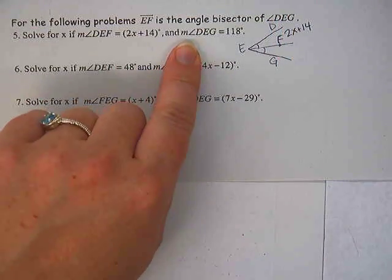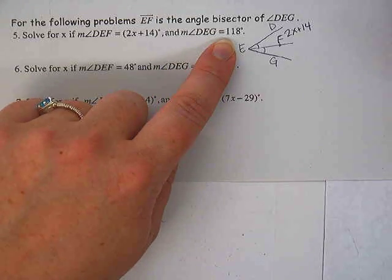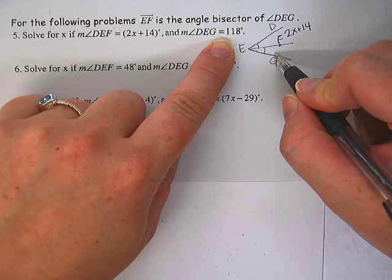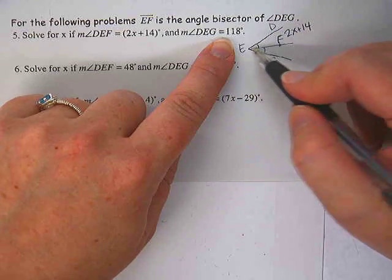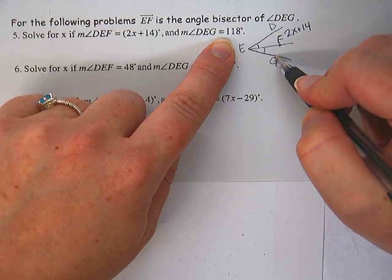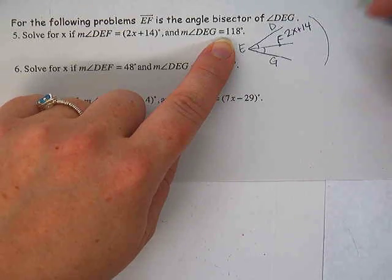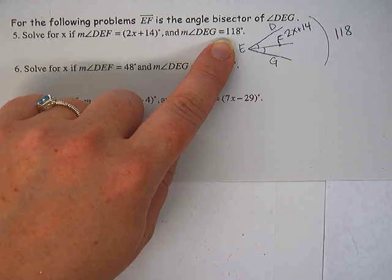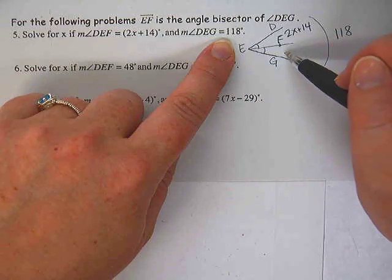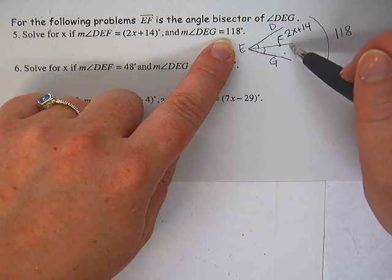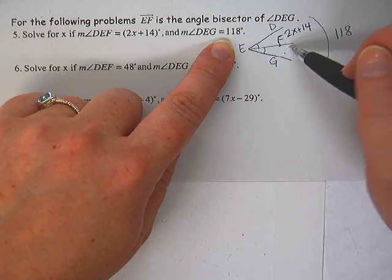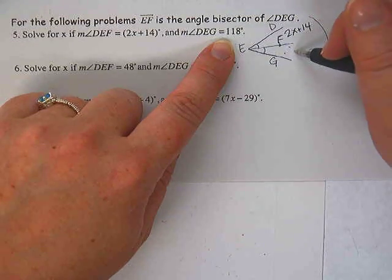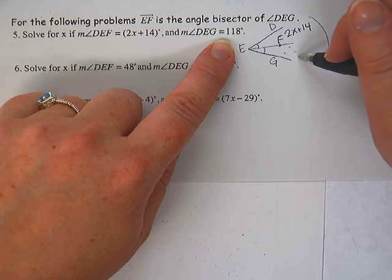Okay, so that means this angle is equal to that angle. So always draw your picture first, then put the information in it. So angle DEF is 2X plus 14, so I'm going to write that in here. And angle DEG is 118. Now before you just suddenly start writing 118 right here, pay attention to the letters. Which angle is DEG? DEG is the whole thing. Since 118 is not just that little angle, can I just go this equals this like I did on the last problem? No.